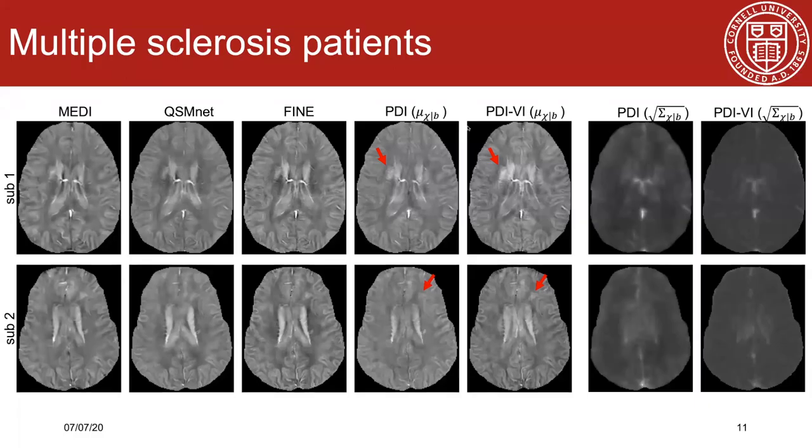Here are the susceptibility maps of two test cases in MS lesion dataset. Lesions indicated by the red arrows near the ventricle were underestimated in PDI but were recovered in PDI-VI. Since these lesion patterns were not seen during COSMOS pre-training, suboptimal reconstructions could happen when applying the pre-trained model on new test dataset deviating from the trained dataset. Domain adaptations like PDI-VI and FINE help correct such generalization error with different strategies.